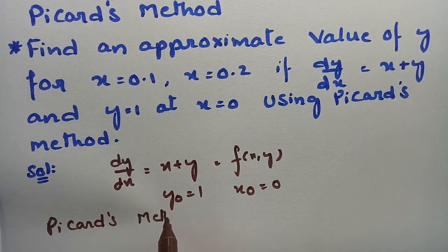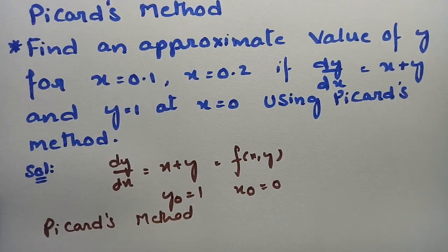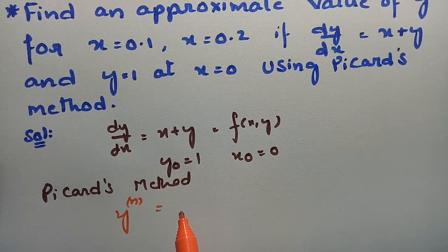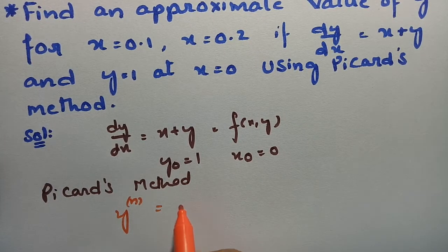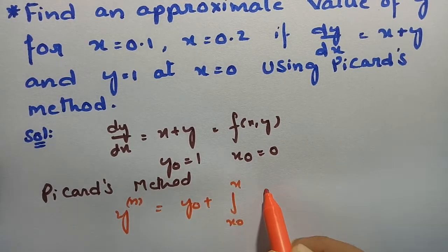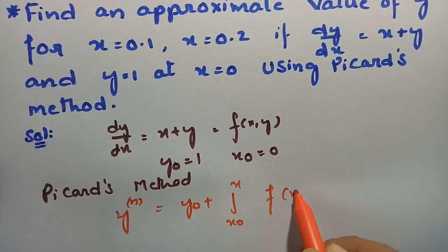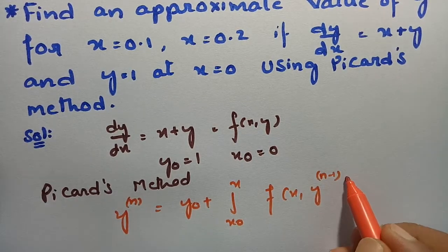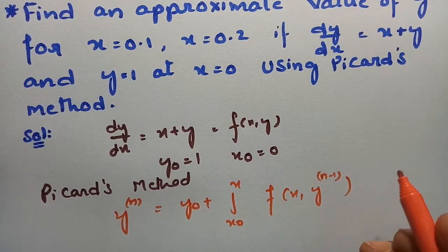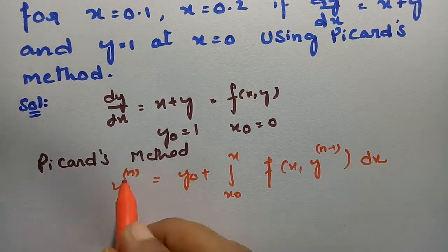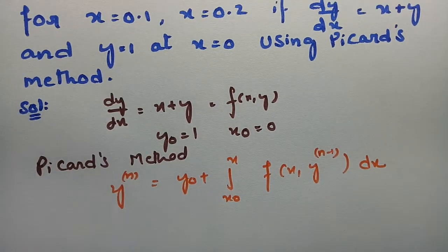According to Picard's method, y at the nth approximation equals y₀ plus the integral from x₀ to x of f(x, y_{n-1}) dx. This formula we have to use for all the approximations.